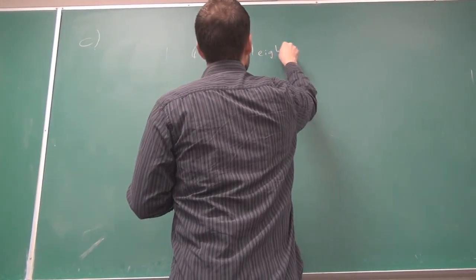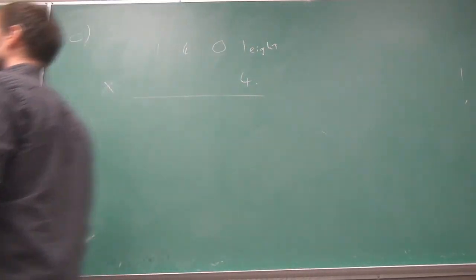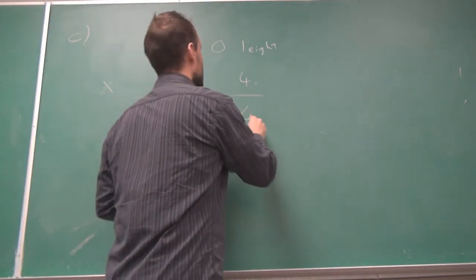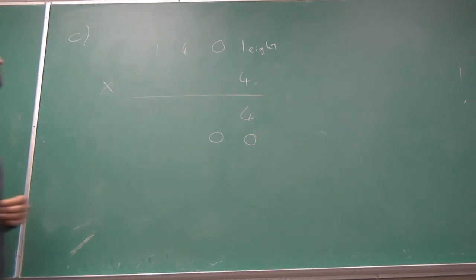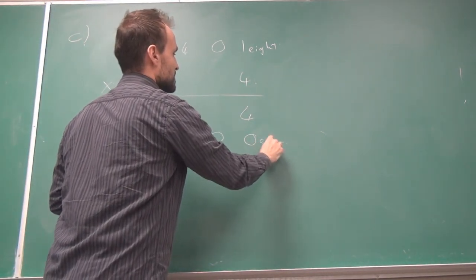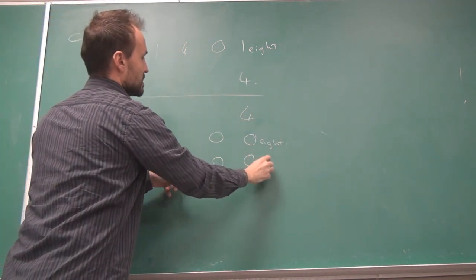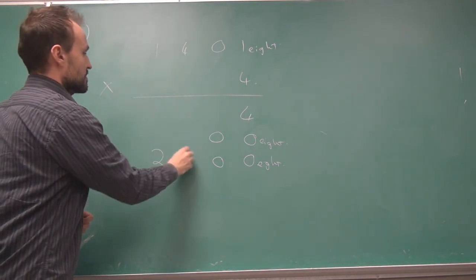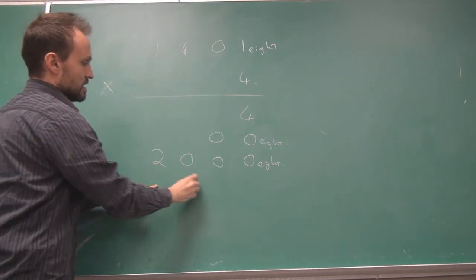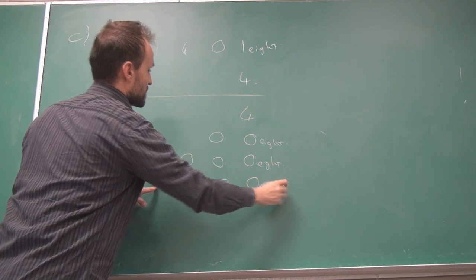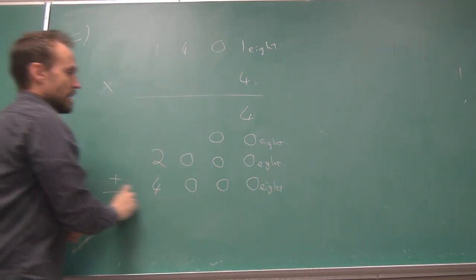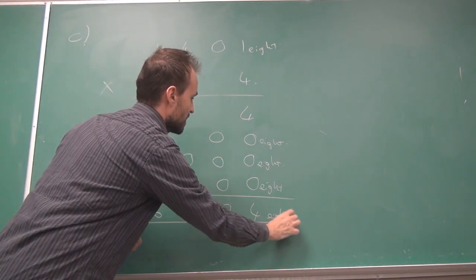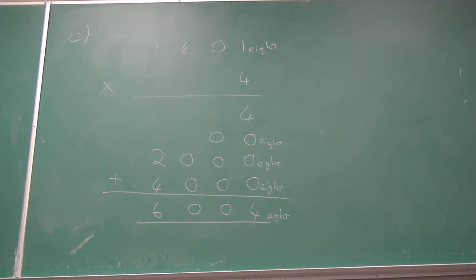Part C: 1401 base 8 times 4. Four times 1 is 4. Four times 0 is 0 — written right there. Four times 4 is 16 — in groups of 8, that's 2 groups of 8 and 0 left over, padded with zeros. Four times 1 is just 4, padded with zeros for its place. Adding all partial products together, with very little carrying over in the addition step of multiplication.